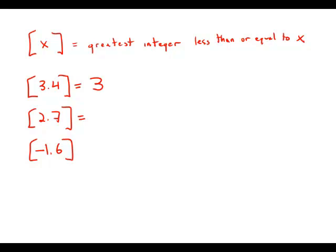Similarly, 2.7. 2.7 is not an integer. The largest integer that is still smaller than it is 2.